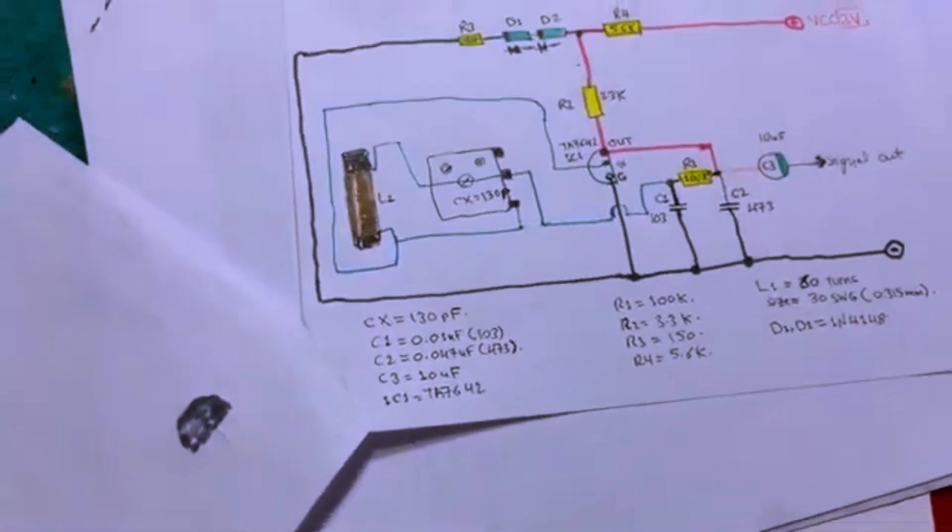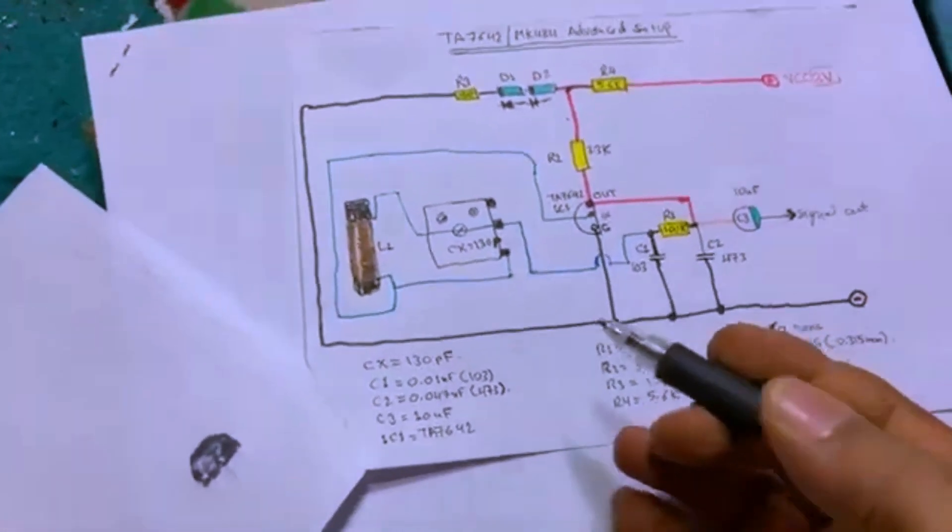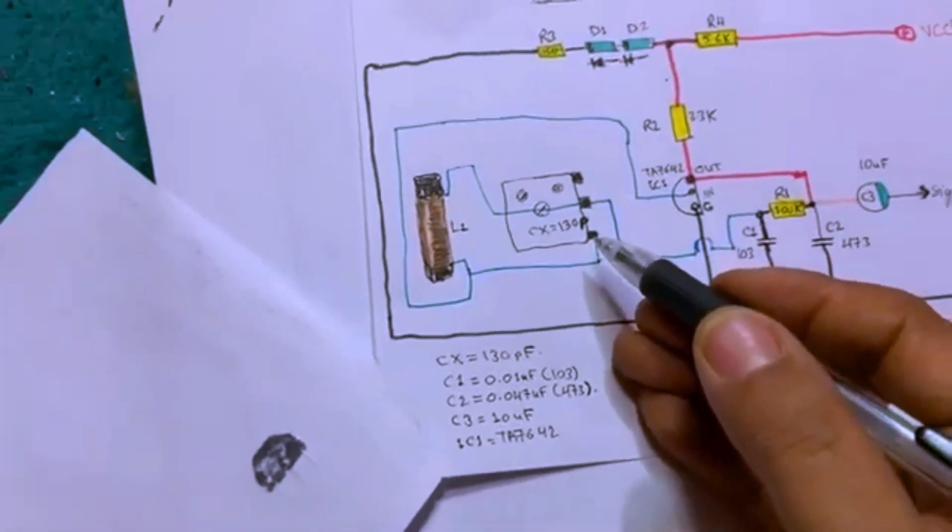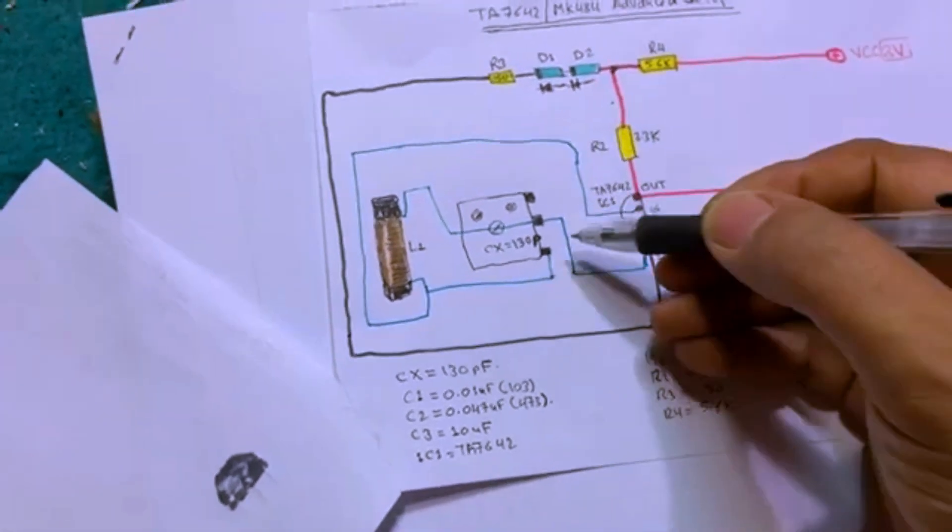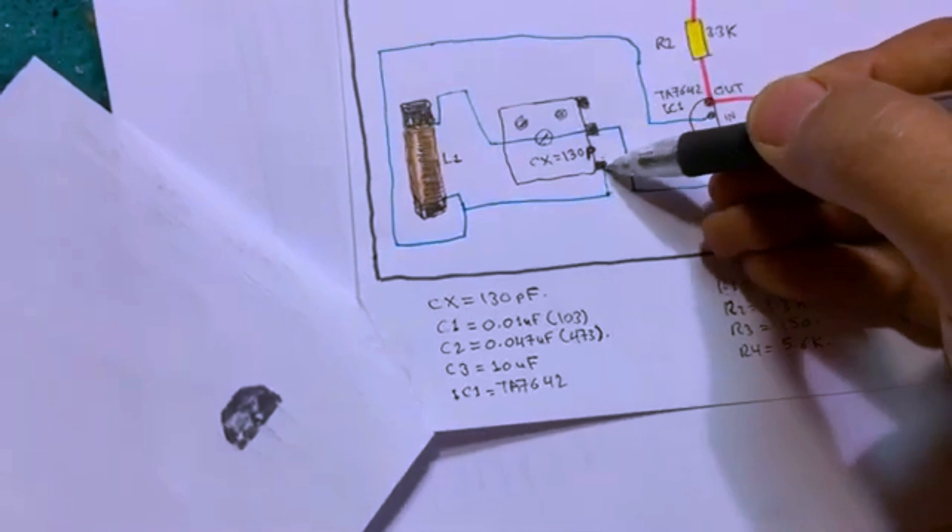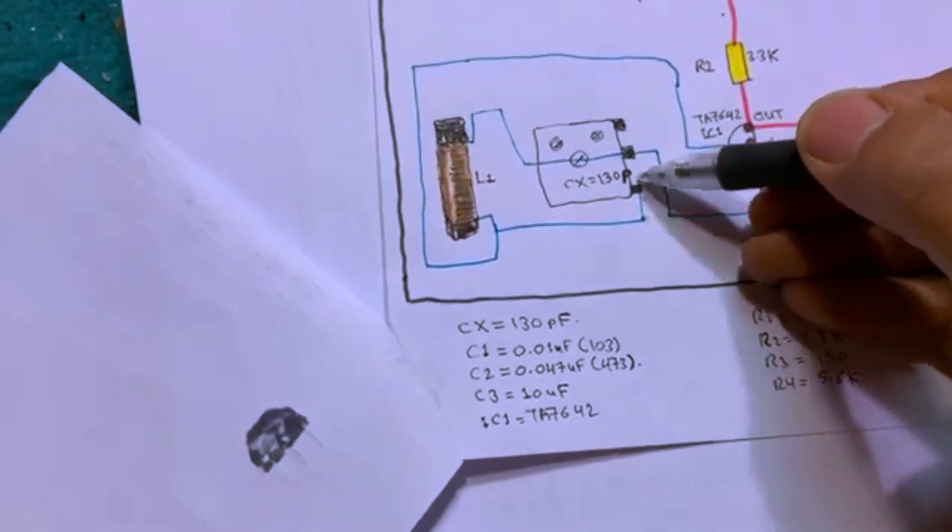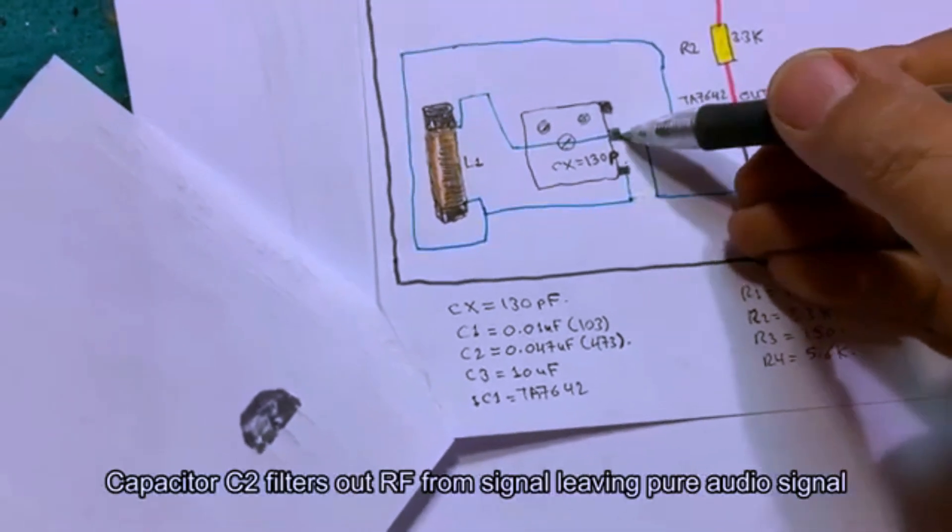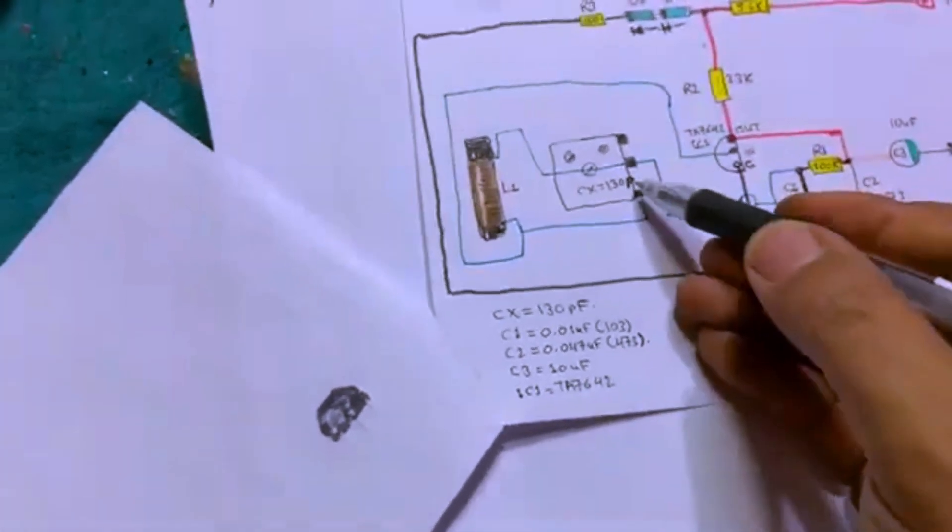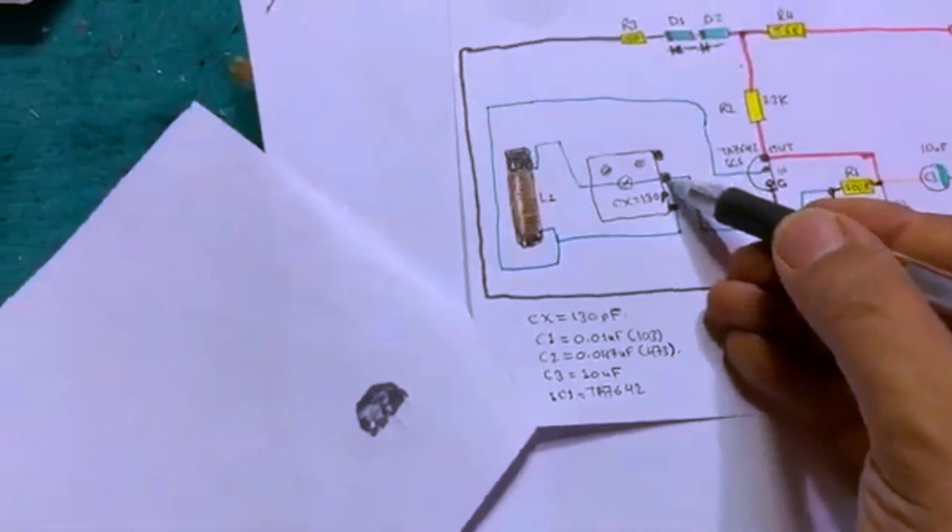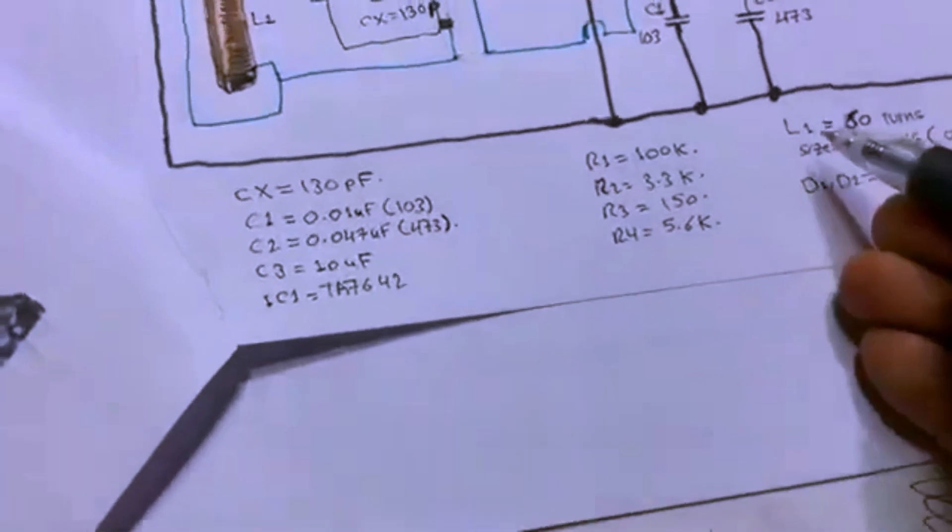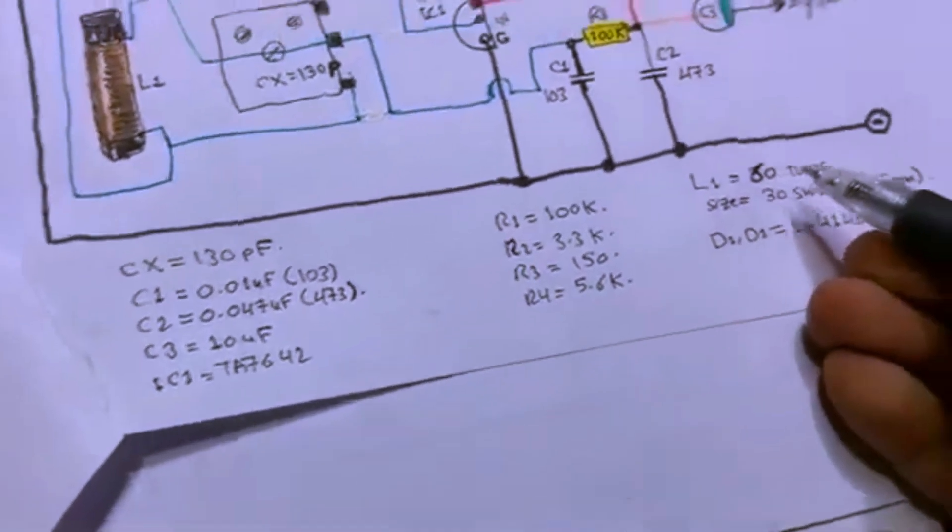All you have to do number one is to bring a variable capacitor, gang variable capacitor. Only you connect from one side, this side should be 130 picofarads, that's the minimum. You can use 90 picofarads but the best is 130 picofarads. You connect immediately to the coil and the coil is L1, no less than 60 turns.